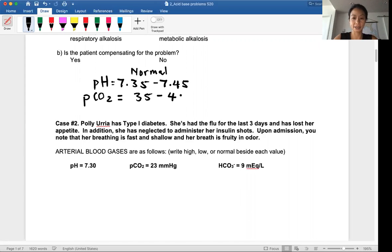The pCO2 in the blood is 35 to 45 millimeters of mercury, and then the HCO3 value, the bicarbonate value, for normal is 22 to 26 milliequivalent per liter.